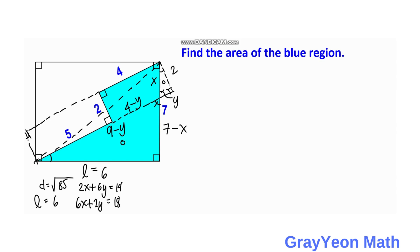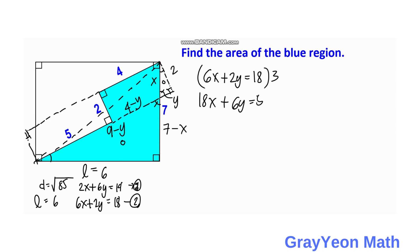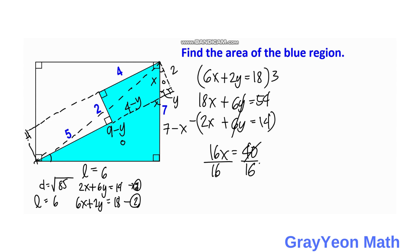To solve these two equations, we multiply Equation 2 by 3: 18x + 6y = 54. Subtracting Equation 1 (2x + 6y = 14) cancels the 6y terms, giving 16x = 40, so dividing both sides by 16 gives x = 40/16 = 5/2 = 2.5.